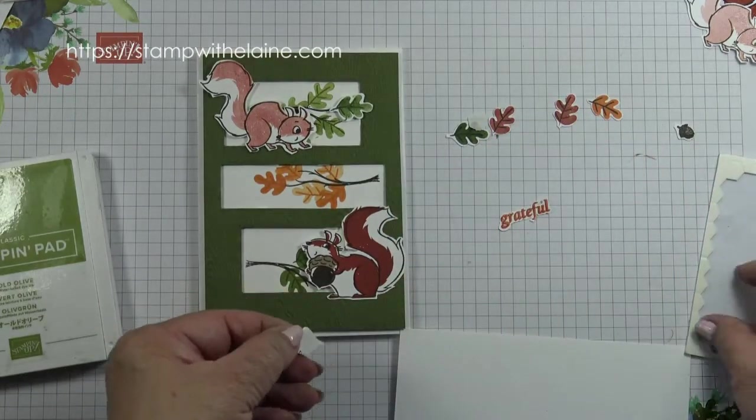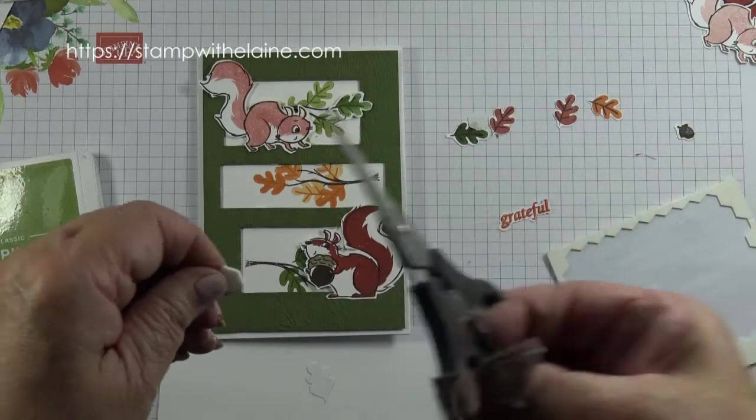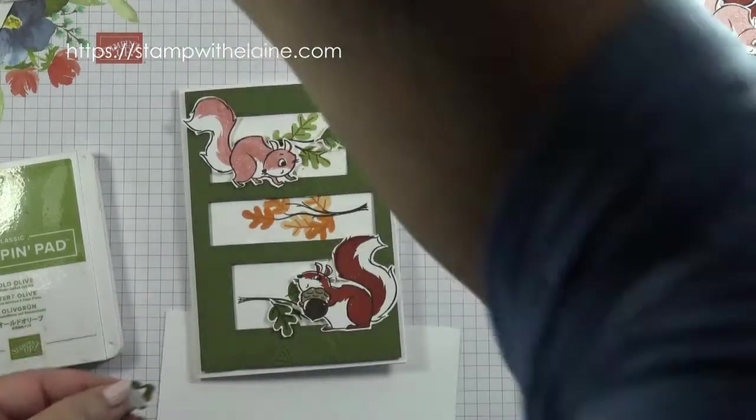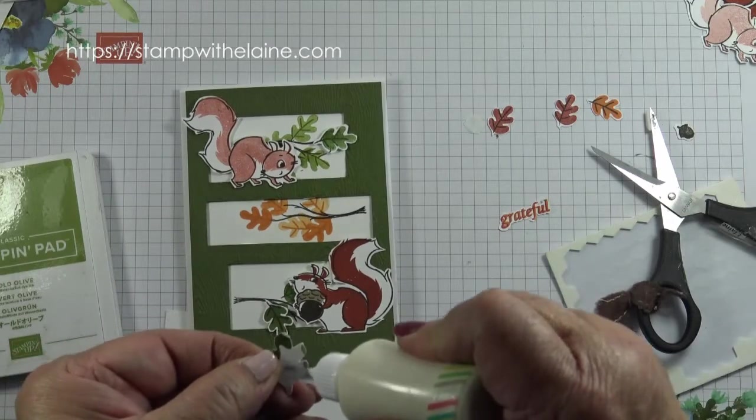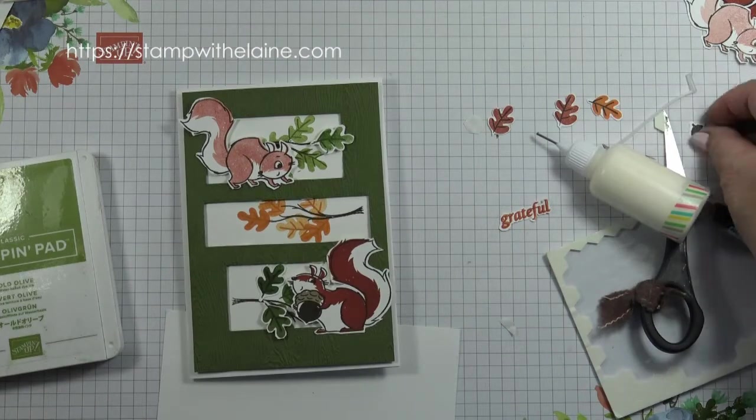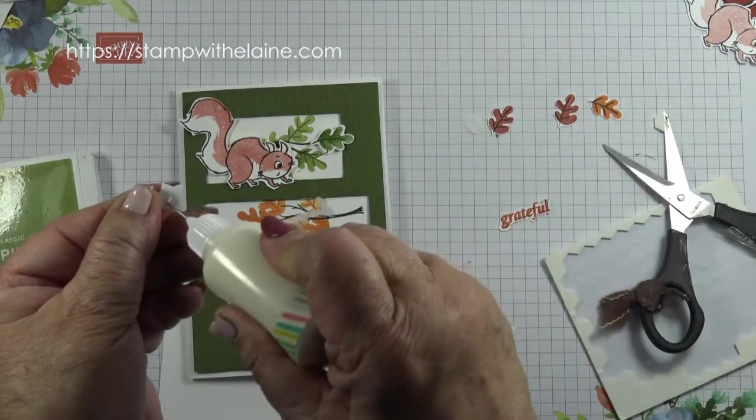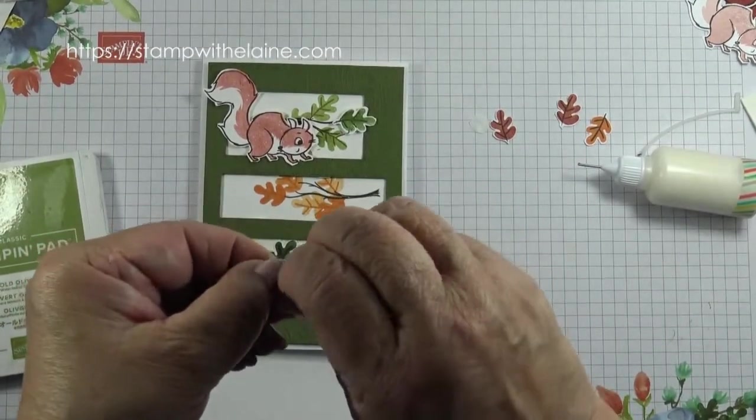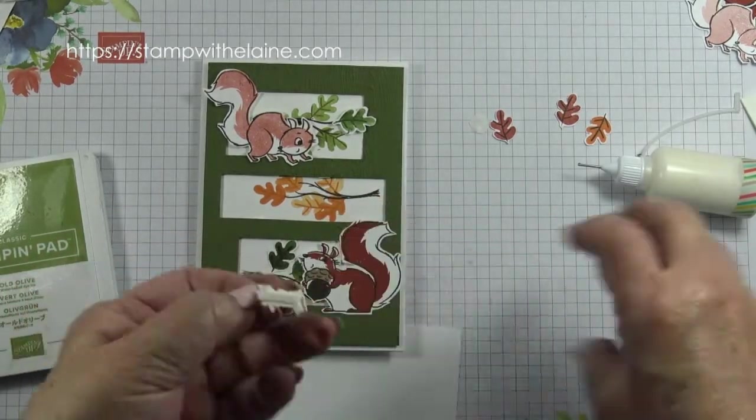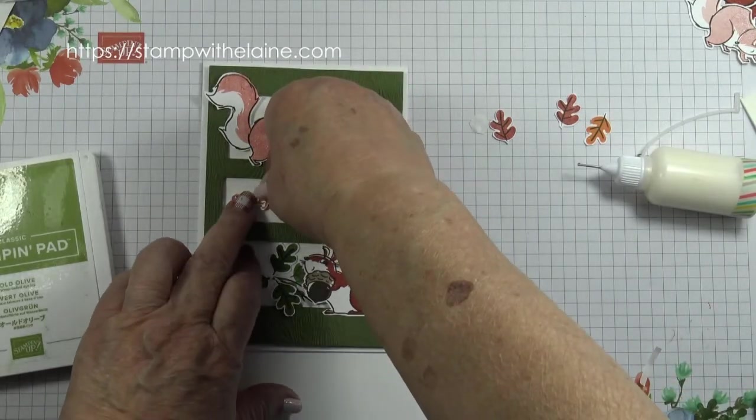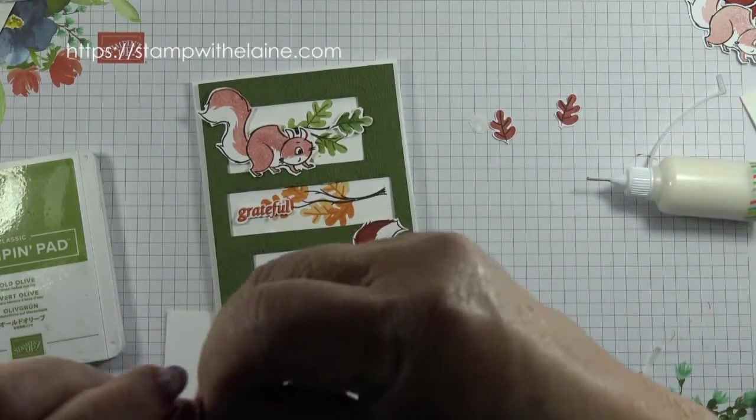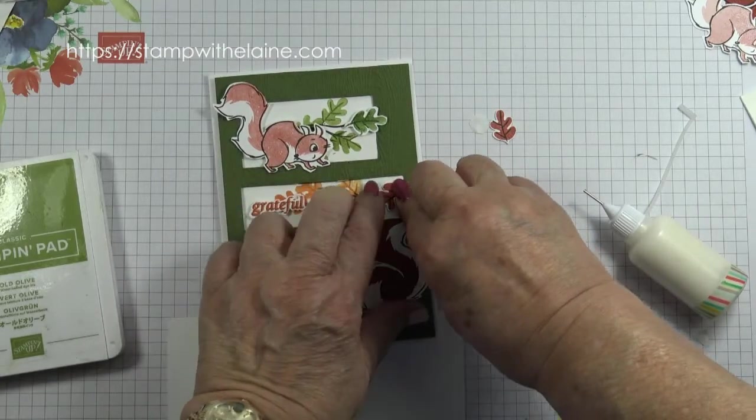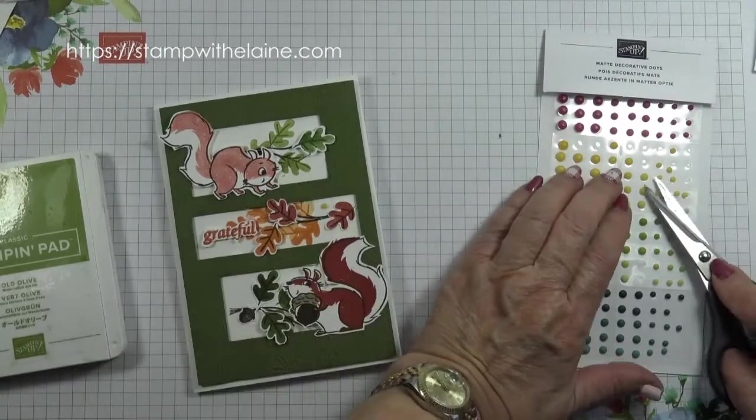I think I might need some extra leaves here to pad it out. Cut that in half because it's too big. So I think I'll glue this one directly onto the cardstock like so and also the acorn. I've popped dimensionals on the back here. So remove the backing tape from that as well and pop this on top. Dimensionals on the back of this leaf. And lastly add some matte decorative dots.